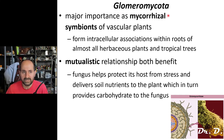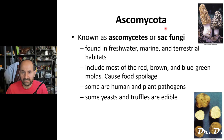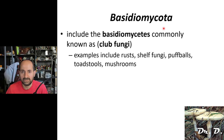Glomeromycota are mycorrhizal symbionts — they form a mutualistic symbiotic relationship with the roots of plants. They provide osmotic relief and nutrients to the plant root, while the plant root provides sugars to the fungi, so they benefit one another. The Ascomycota, known as sac fungi, have spores formed within a sac and include the yeasts and truffles. The Basidiomycota, also known as the club fungi, include common fungi such as mushrooms, toadstools, shelf fungi, puffballs, rusts, and more.